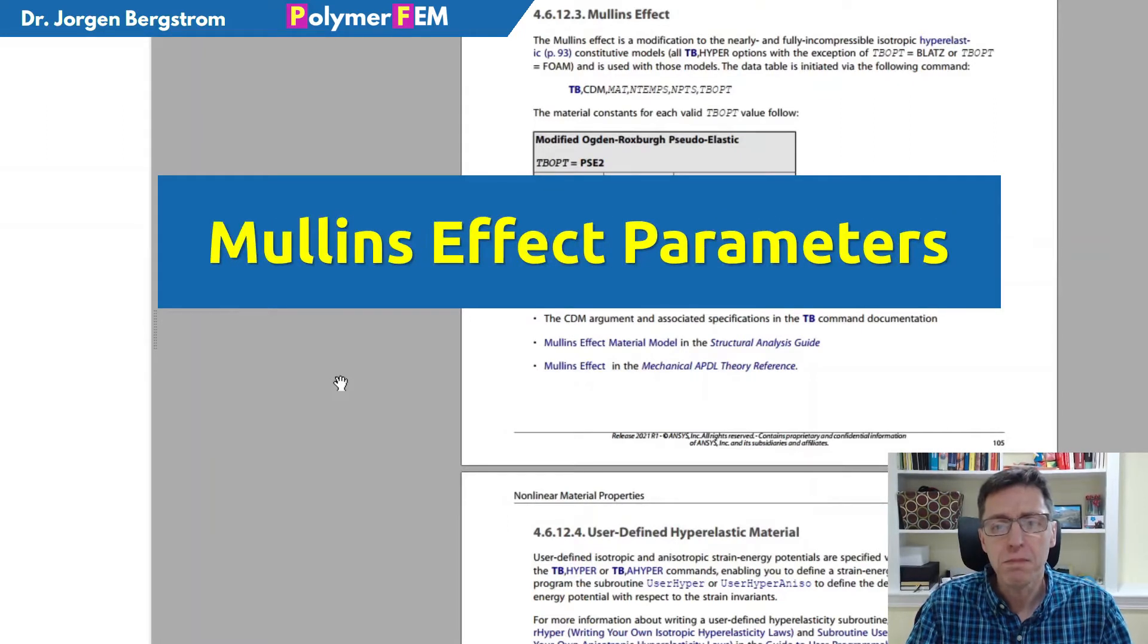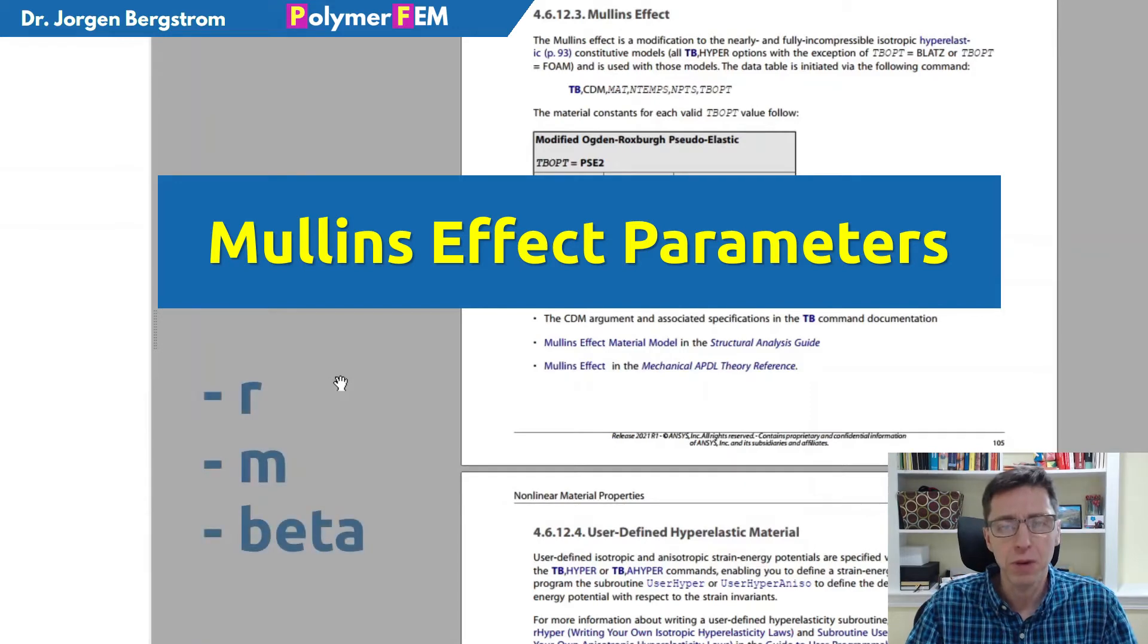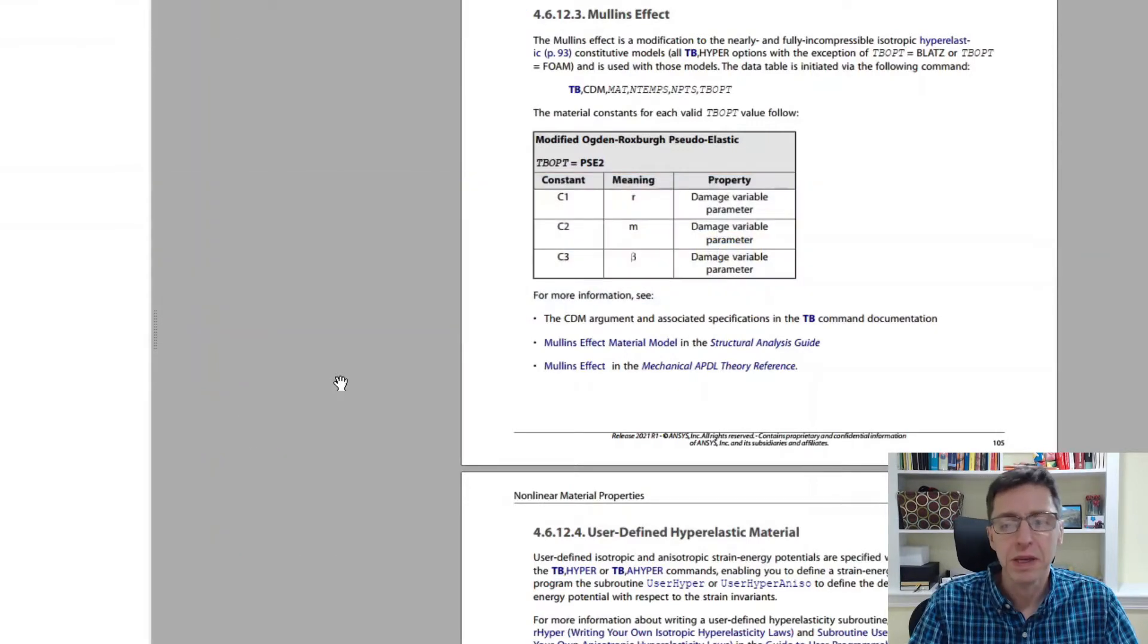Hi and welcome. Today I'm going to talk about the Mullins effect and specifically what the different material parameters in the Mullins effect model available in virtually all finite element programs really do, what they mean, and how you can use this information to come up with an experimental test program to help you determine these parameters in the best way.